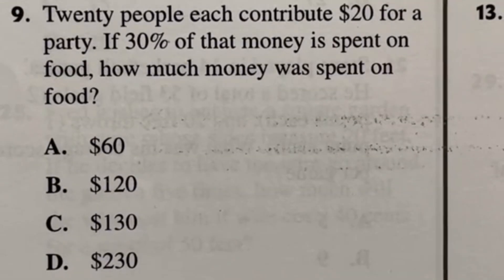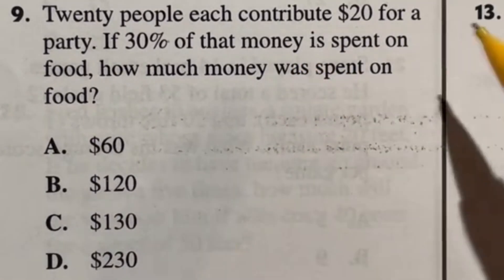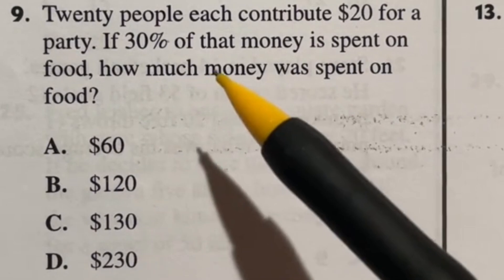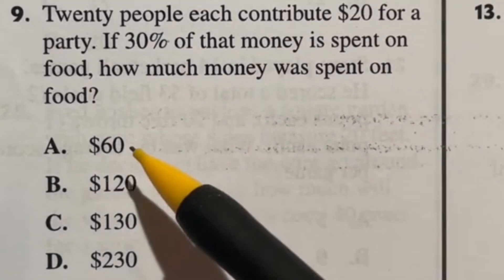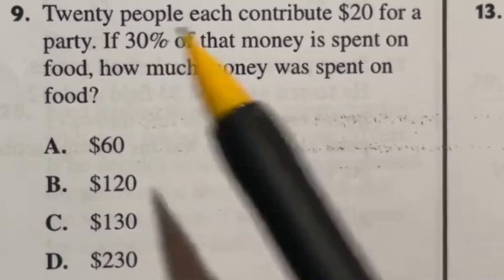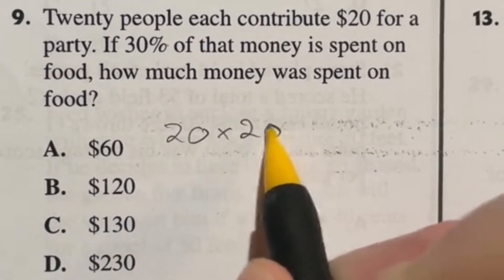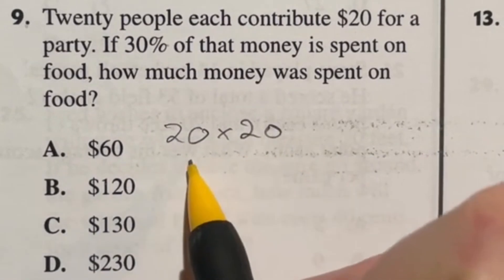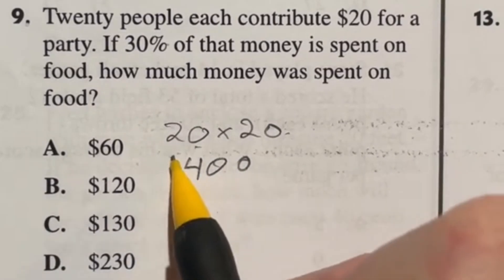Number nine is essentially a two-step pretty basic problem here. It says 20 people each contribute $20 for a party. If 30% of that money is spent on food, how much money was spent on food? First things first, how much total money do we have here? Well, if 20 people are giving $20 apiece, we just multiply the two of those together. Two times two gives us four. And then we have those two zeros that will come down for a total of $400.